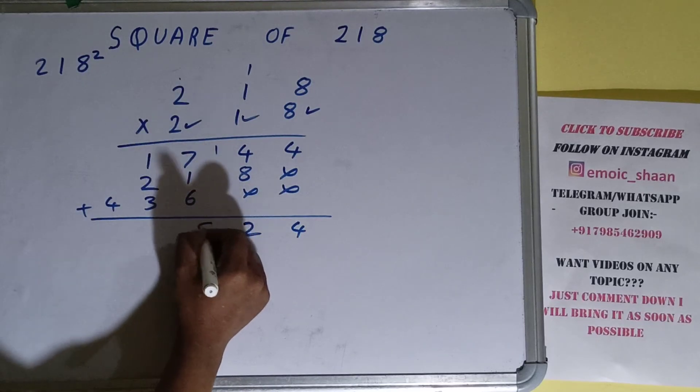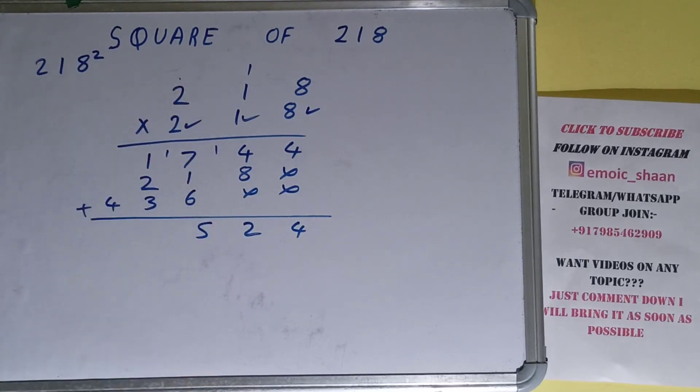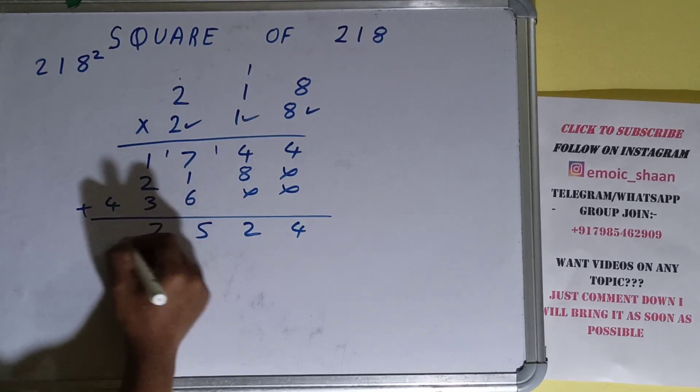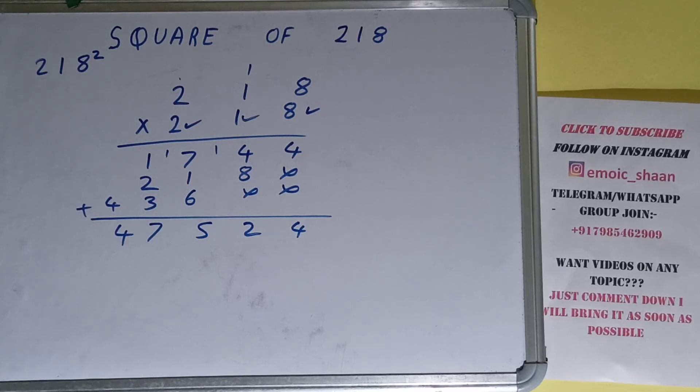this will be 5, this will be 7, and this will be 4. So the answer will be 47524. That will be the square of the number 218. So this is all. If you found the video